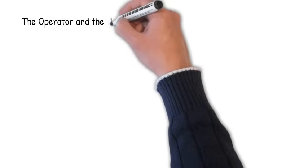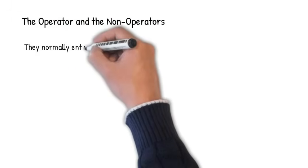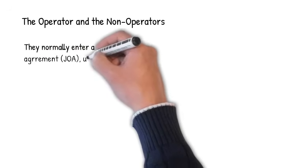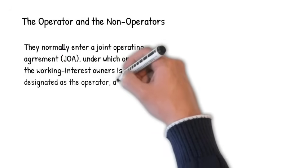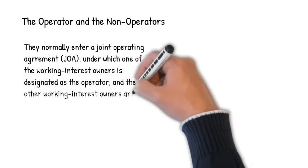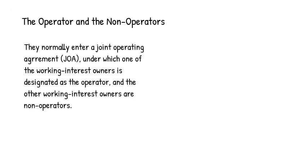The operator and the non-operators normally enter a joint operating agreement, also known as a JOA, under which one of the working interest owners is designated as the operator and the other working interest owners are designated as the non-operators.